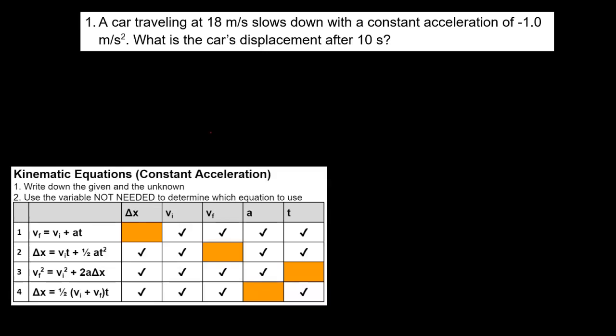In this video you will learn how to solve kinematic equations using the kinematic chart. A car traveling at 18 meters per second slows down with a constant acceleration of negative 1.0 meters per second squared. What is the car's displacement after 10 seconds?